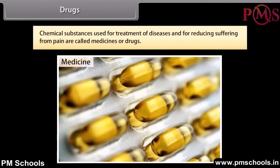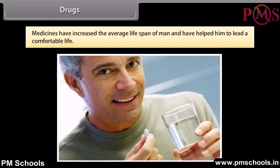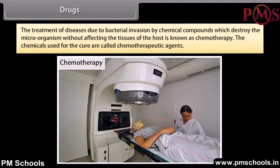Chemical substances used for treatment of diseases and for reducing suffering from pain are called medicines or drugs. The use of some chemical compounds as medicines has helped humanity in a number of ways — to cure diseases, reduce suffering from pain, and check population explosion. They have increased the average lifespan of man. The treatment of diseases due to bacterial invasion by chemical compounds which destroy microorganisms without affecting the tissues of the host is known as chemotherapy. The chemicals used for the cure are called chemotherapeutic agents.